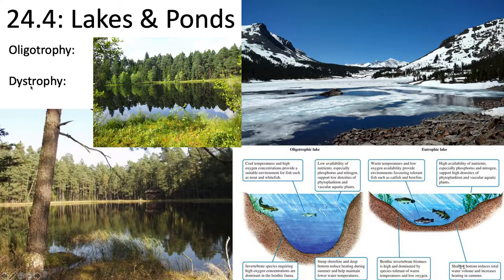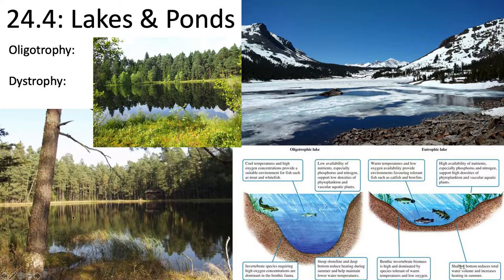Dystrophy in lakes is when organic matter from the land — mainly humic organic matter — stains the water brown. This occurs in contact with peaty substrates that are usually highly acidic, often surrounded by peat or coniferous vegetation whose needles acidify the soil. Dystrophic lakes tend to have productive littoral zones that dominate most of the lake's metabolism — the edges of these lakes tend to be very productive.